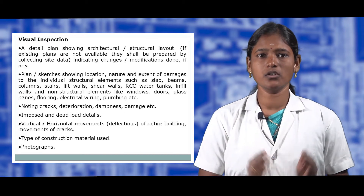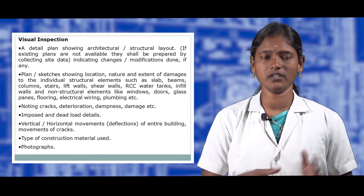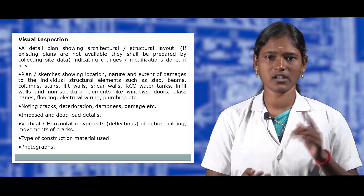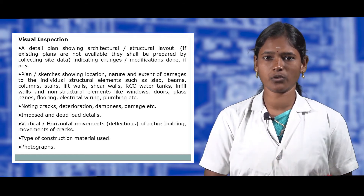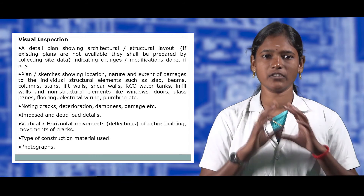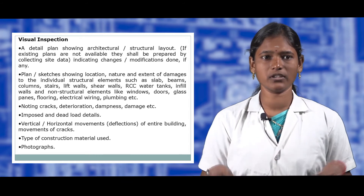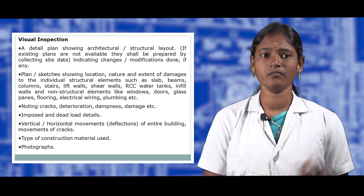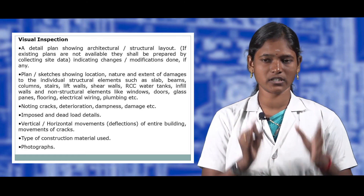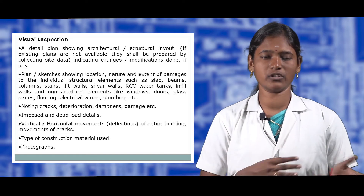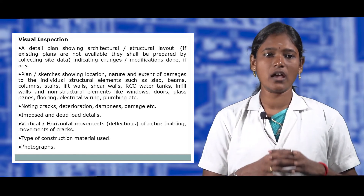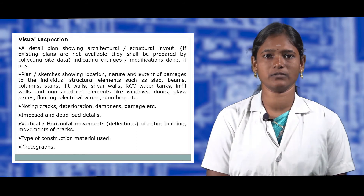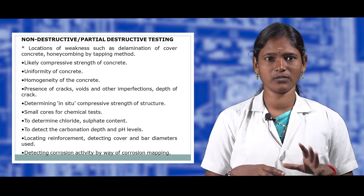In visual inspection, a detailed plan showing the architectural and structural layout should be prepared, indicating any modifications. The plan should be checked for damage to individual structural elements like slabs, beams, columns, ties, shear walls, water tanks, infills, non-structural elements, electrical wiring, and plumbing. Cracking, deterioration, damage, and distress should be noted, along with dead and live loads, horizontal and vertical movements, and the type of construction materials used. Everything should be photographed.